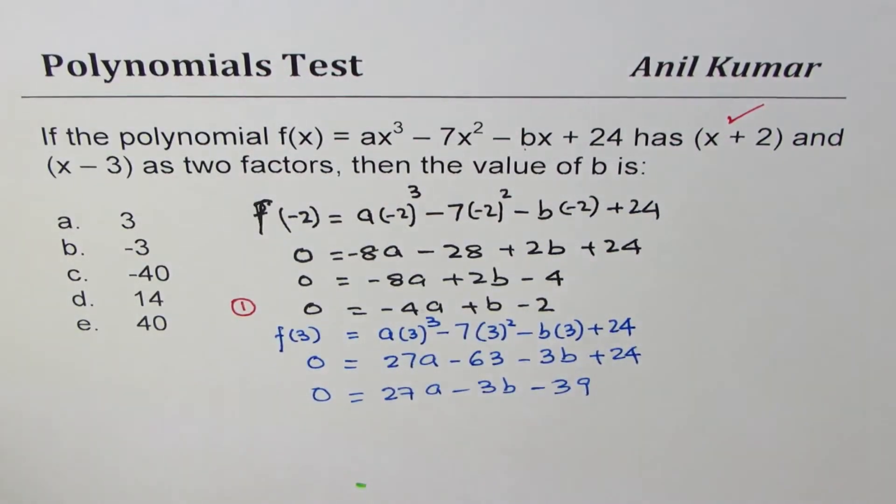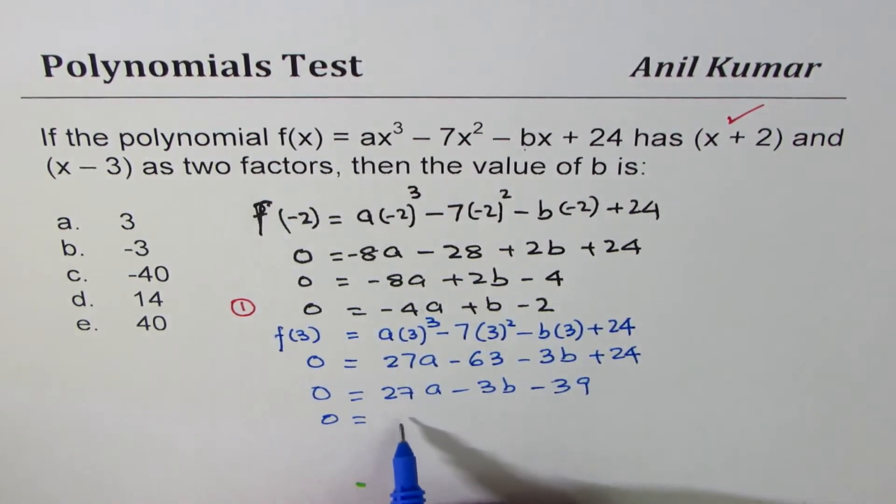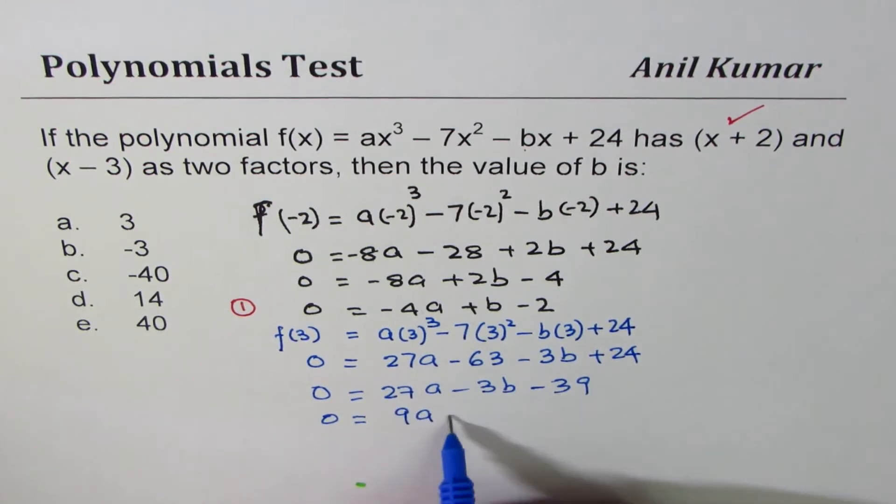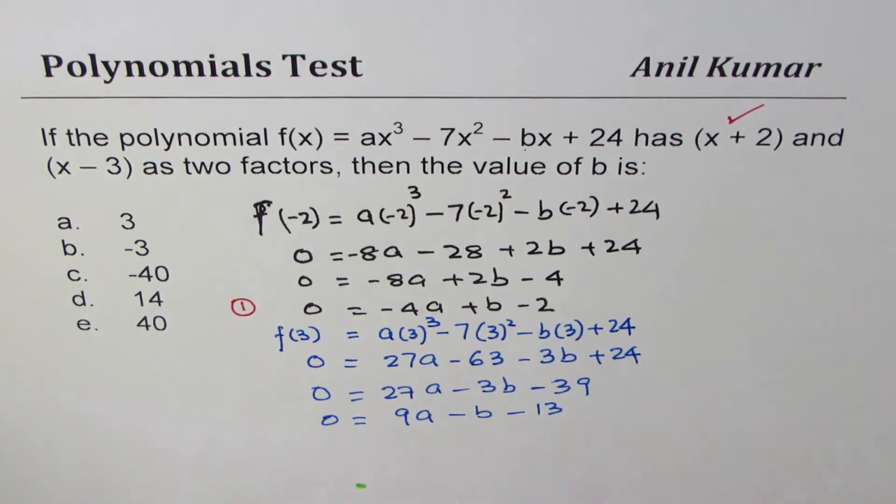equals to 0. We can actually divide all these terms by 3, so we get 0 equals to. Dividing this by 3, we get 9a - b, and this is -13, right? -13.